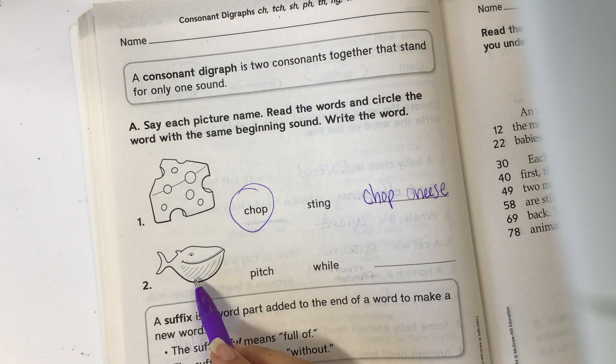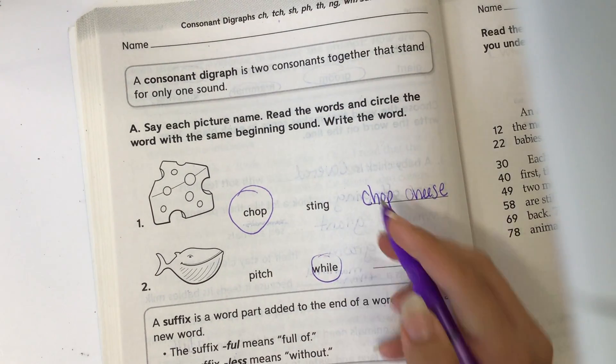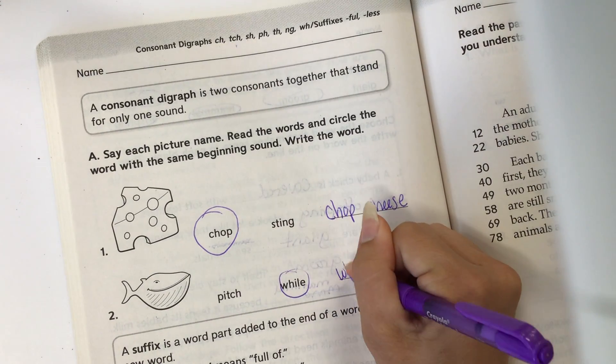Our next word is whale. Wh, whale. This word, wh, while, has the same beginning sound, and I'm going to write while.